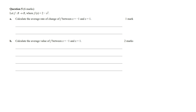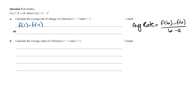To find the average rate of a function between an interval we need to use this formula. So this is going to equal f of 1 minus f of minus 1 over 1 minus minus 1, which is 1 plus 1. f of 1 is equal to 2 minus 1 squared which is 1, and then minus f of minus 1 is also 2 minus 1 which is 1, divided by 2, which equals 0.